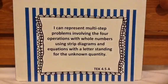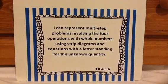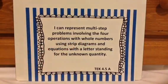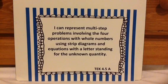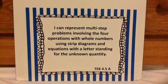So represent means to show, using pictures. Multi-step problems, meaning you might do subtraction and then division, or addition and then multiplication. Involving the four operations: addition, subtraction, multiplication, or division — with whole numbers using strip diagrams, which are rectangles. And equations with a letter standing for the unknown quantity. So whatever you are looking for as your answer, you might put T for total, A for answer, or J for James — however many James has — as the unknown quantity. Before I begin with multi-step problems, I'm going to first start talking about each operation on its own and what the representation looks like, and then we will slowly combine.